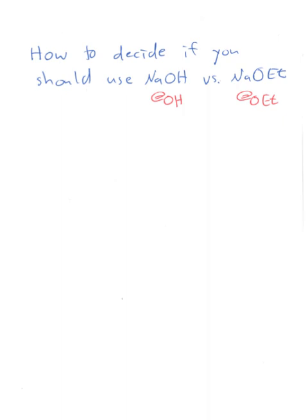How do you decide if you should use sodium hydroxide or sodium ethoxide when you want to make an enolate from an ester or an aldehyde in a Claisen or an aldol reaction?